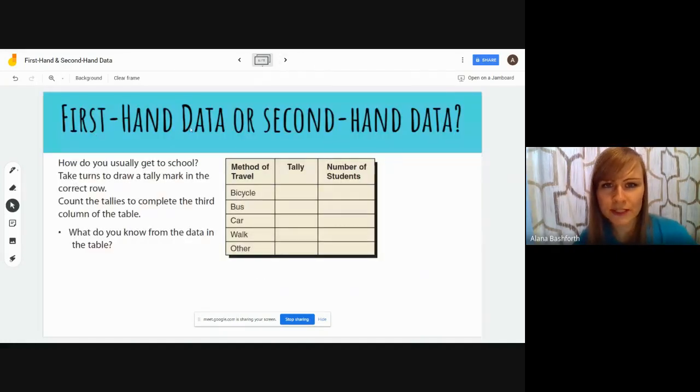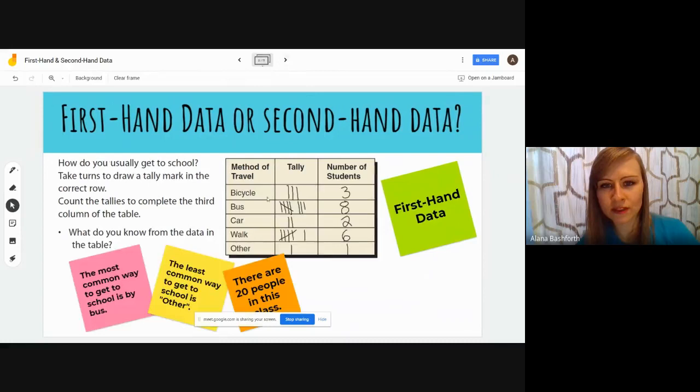Here's the first example: first-hand data or second-hand data. It says how do you usually get to school? Take turns to draw a tally mark in the correct row. This would be something we would do at school if we were there but we're not. Find the tallies to complete the third column of the table. What do you know from the data in the table? First of all, is this first-hand data or second-hand data? If we were to actually do this, it is first-hand data, right? Because we are taking this.